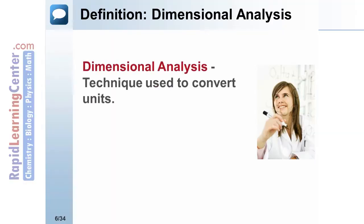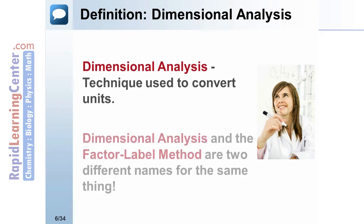Dimensional analysis is a technique used to convert units throughout chemistry. It's also known as the factor label method. If your instructor uses either name, don't worry, they're the same thing.